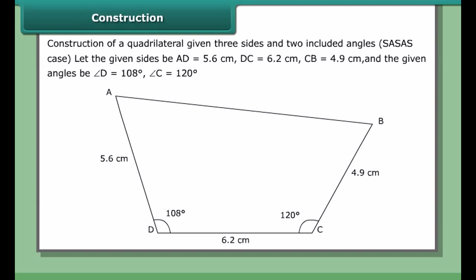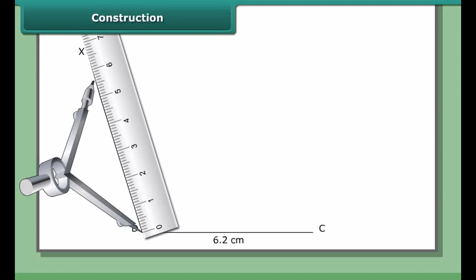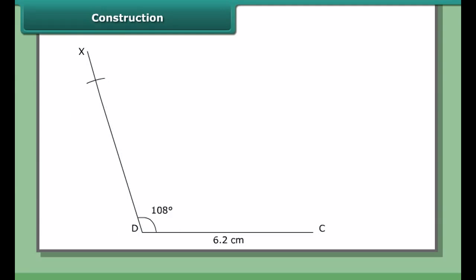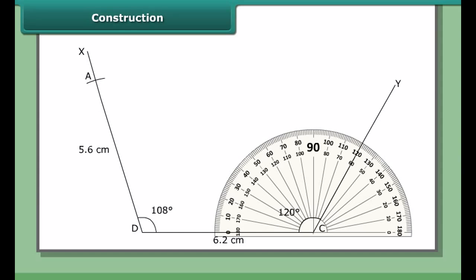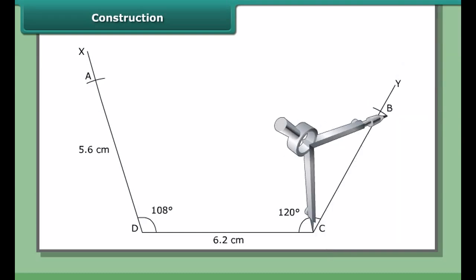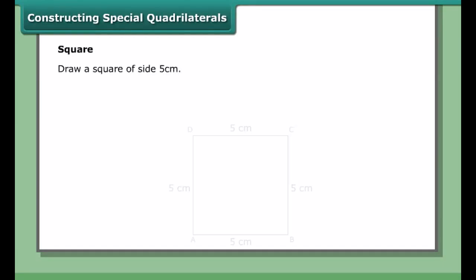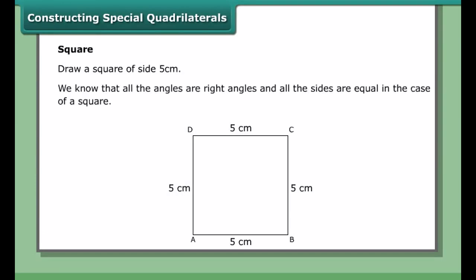Construction of a quadrilateral given three sides and two included angles — the SASAS case. Let the given sides be AD = 5.6 cm, DC = 6.2 cm, CB = 4.9 cm, and the given angles be angle D = 108° and angle C = 120°. Draw DC as 6.2 cm. At D, draw angle CDX = 108°. With D as center and radius 5.6 cm, cut off DA = 5.6 cm on ray DX. At C, draw angle DCY = 120°. With C as center and radius 4.9 cm, cut off CB = 4.9 cm on ray CY. Join AB. Then ABCD is the required quadrilateral.